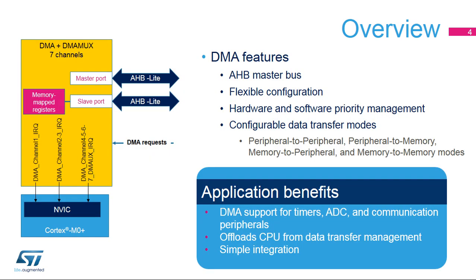The DMA controller supports two AHB lite ports. One is the master port used by the DMA channels to autonomously access memory-mapped locations, memory, or peripheral registers. The other is a slave port providing access to the DMA controller control and status registers.